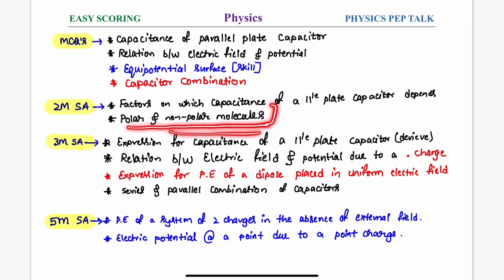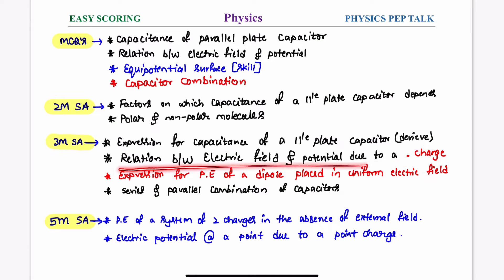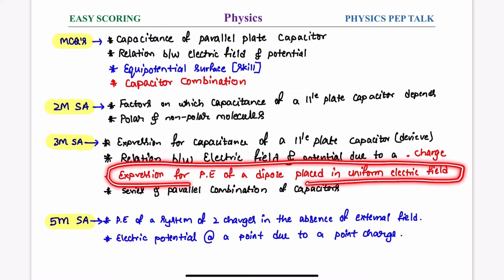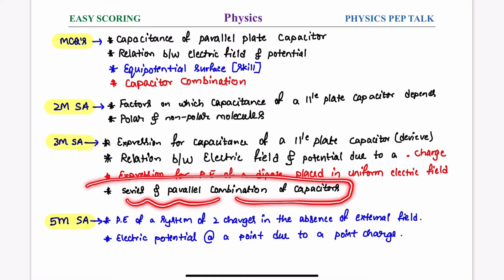Polar and non-polar molecules — just the definition can be asked for 2 marks. For 3 marks, the expression for capacitance of a parallel-plated capacitor, the relation between electric field and potential due to a point charge, the expression for potential energy of a dipole placed in a uniform electric field are likely derivation topics.